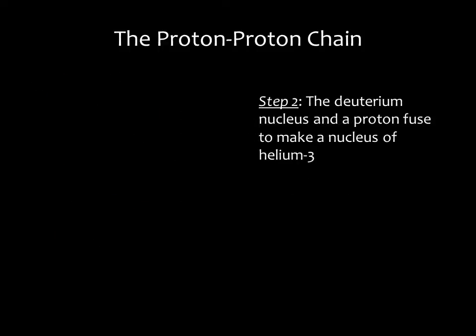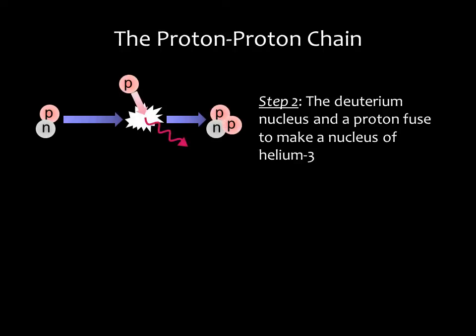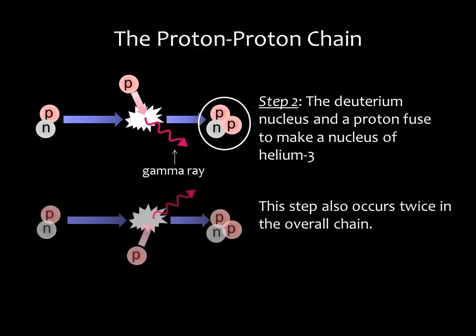In the second step, a deuterium nucleus fuses with a proton, resulting in a nucleus of helium-3. Helium-3 is a rare form of helium with two protons and one neutron. We also get a gamma ray photon. Again, this step occurs twice in the chain.